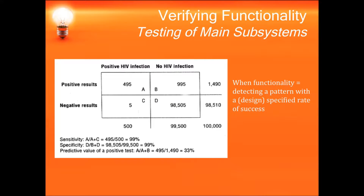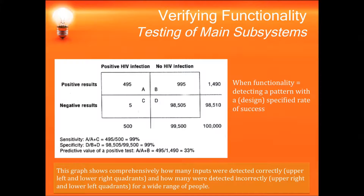In this next example, we show the same concept of pattern detection as the function in a system for a biomedical design. The goodness or functionality of the system is measured in two ways: the number of false positives — how many individuals with no HIV infection are incorrectly determined to have HIV — and the number of false negatives — how many individuals with HIV infection are incorrectly determined to not have HIV. How important each type of error, false positives and false negatives, are is highly dependent on the application. In this example, we might imagine false negatives to be more of an issue, but this requires more knowledge of the application and ultimate market for this product to understand.